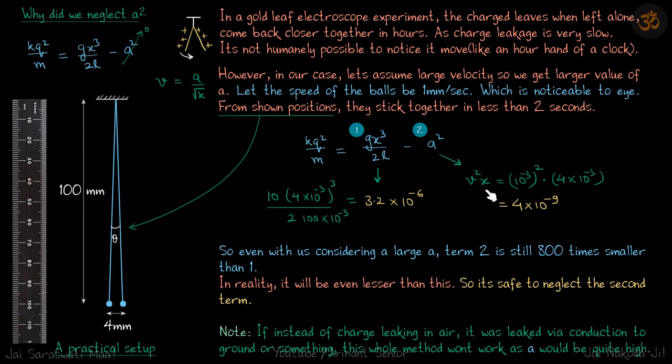And A square - A is V root X, so A square is V square X. V we are assuming to be very high which is 1 mm per second. This becomes 10 to the power minus 3 whole square times X which is 4 mm. This comes to be 4 into 10 to the power minus 9.